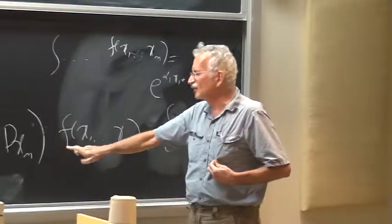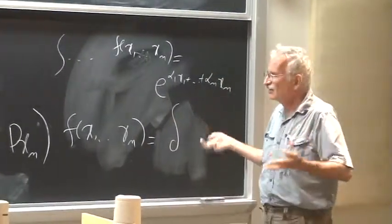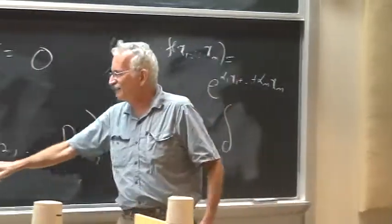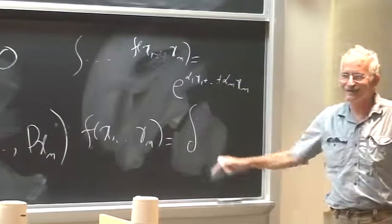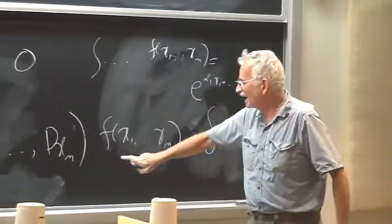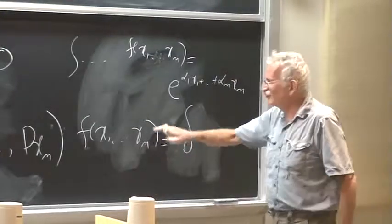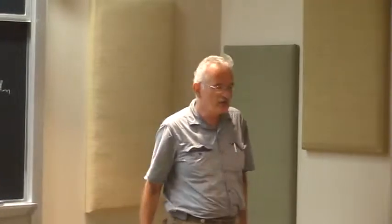Since this is a distribution, you cannot hope that this is an ordinary function. If you take a regular, differentiable function and you apply a differential operator, you get another nice function. You cannot get a distribution, a crazy function out of a nice function. So this has to be also a distribution. And nobody could prove that Ehrenpreis and independently Malgrange...